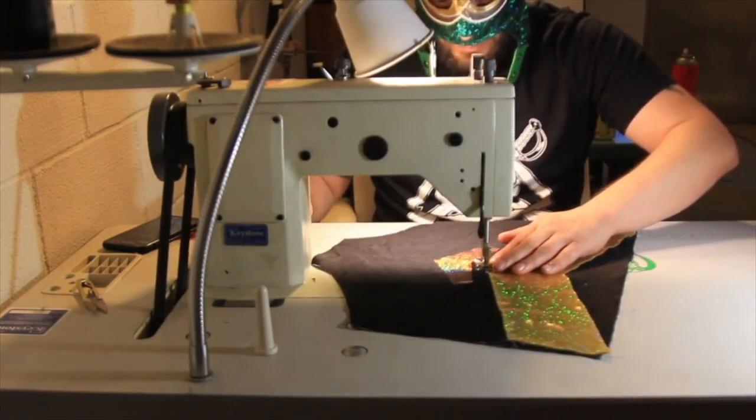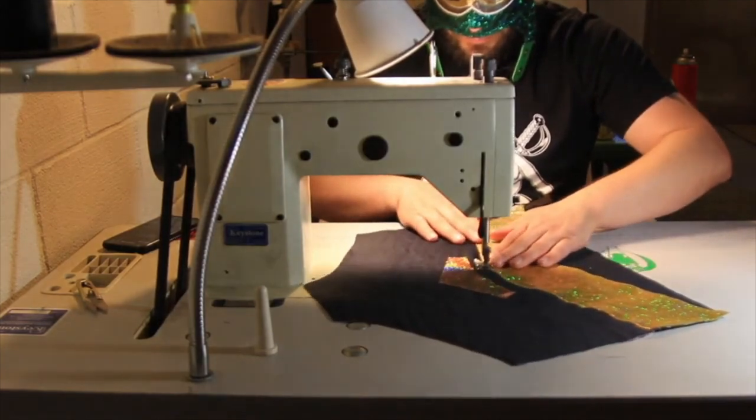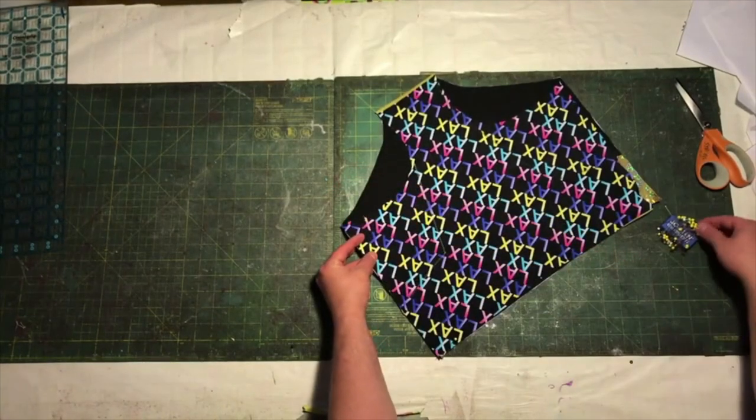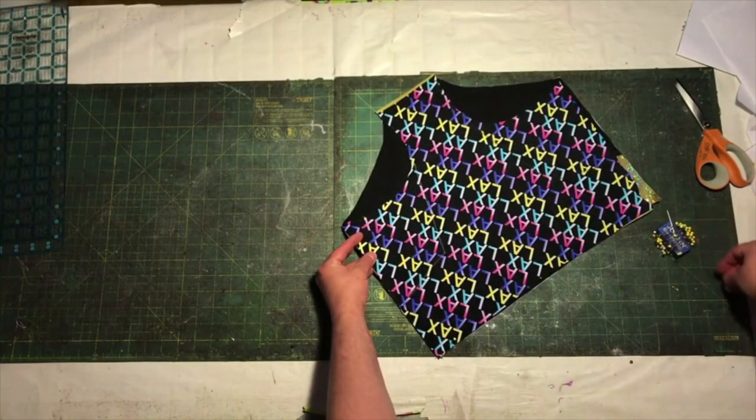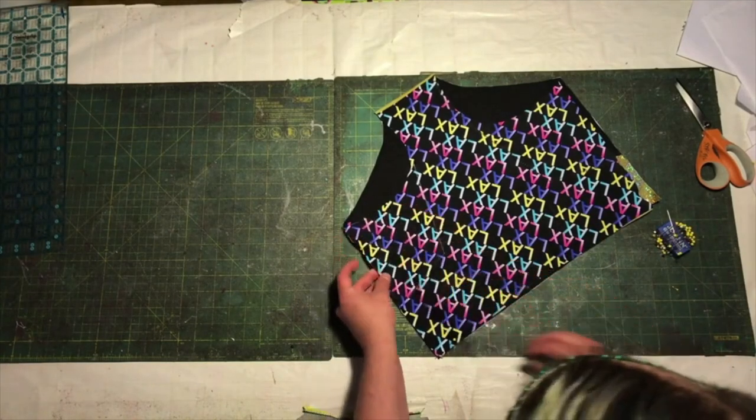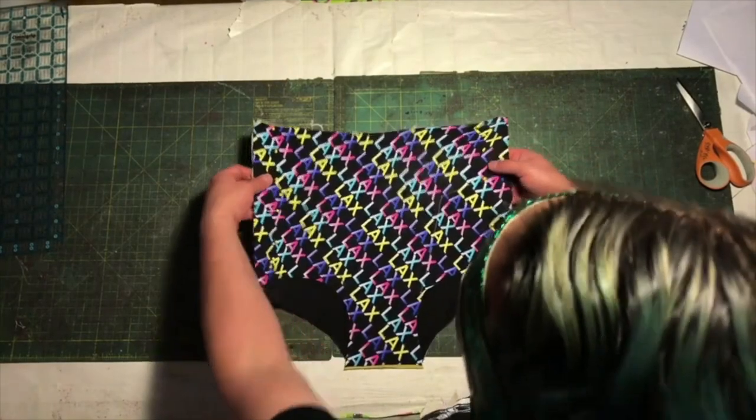Don't forget to backstitch at the beginning and end of each applique, as well as on any corners and thin spots. Once your applique has been firmly attached, you can finally sew some actual seams. So many people don't realize that the designs go on the pieces before they get put together, not after.